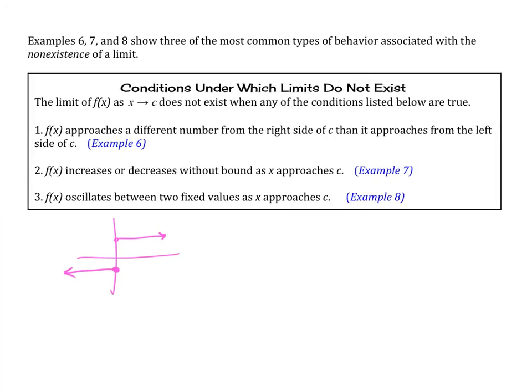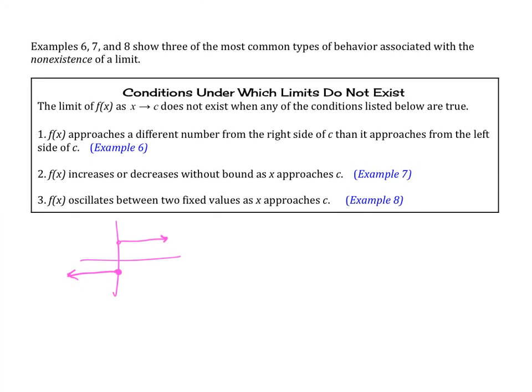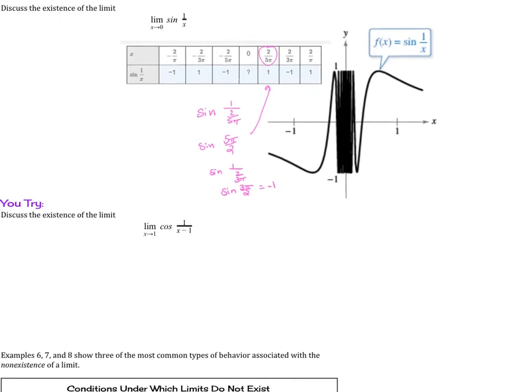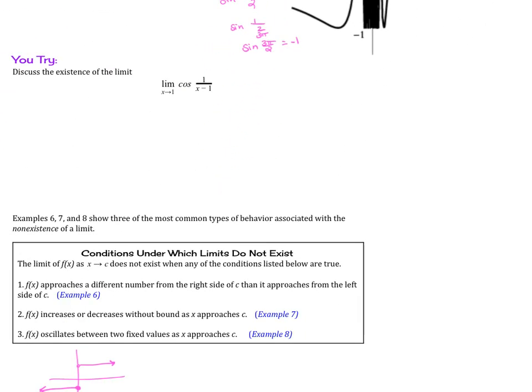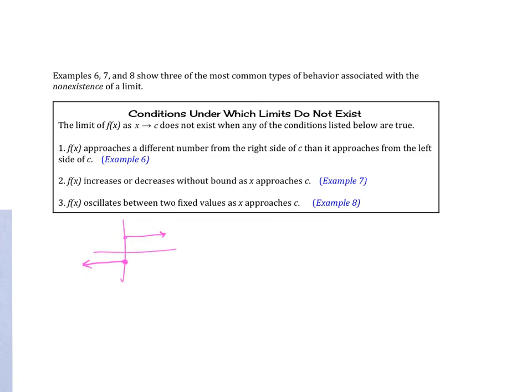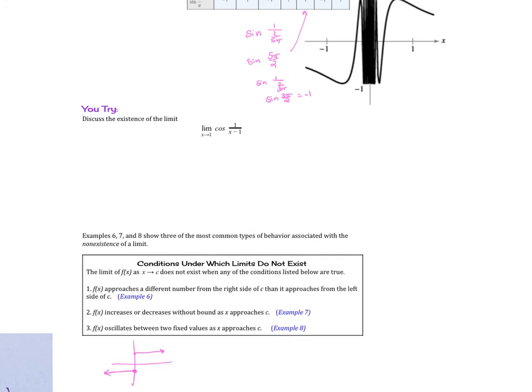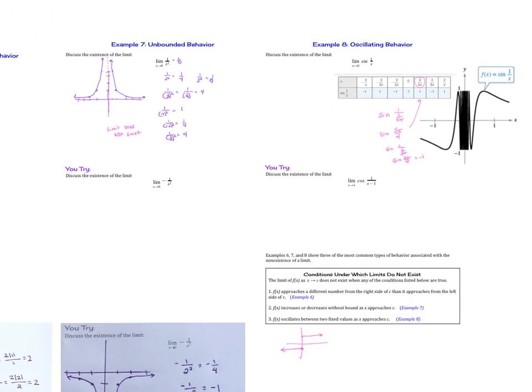And then number three, if f of x oscillates between two fixed values as x approaches c, so it's oscillating, our example number eight, it's oscillating between 1 and negative 1, the limit also does not exist for that one. So hopefully that helps you out, just some general information about when limits do not exist.